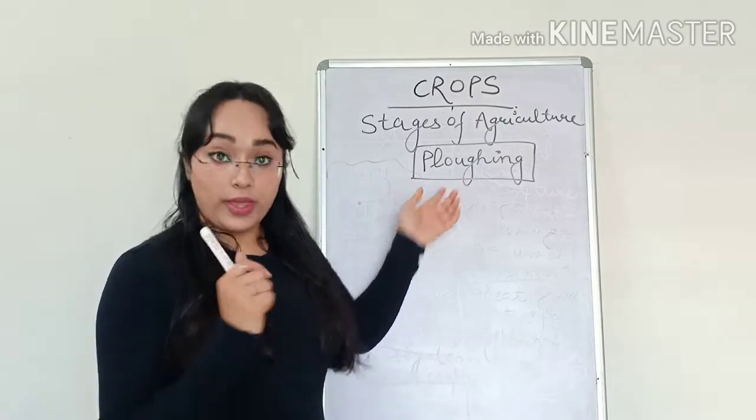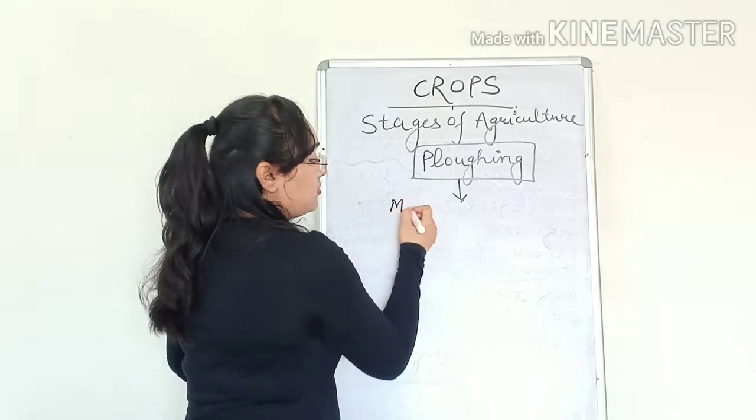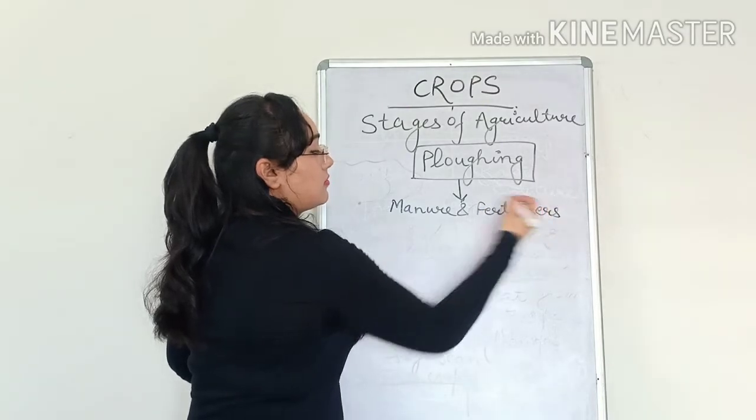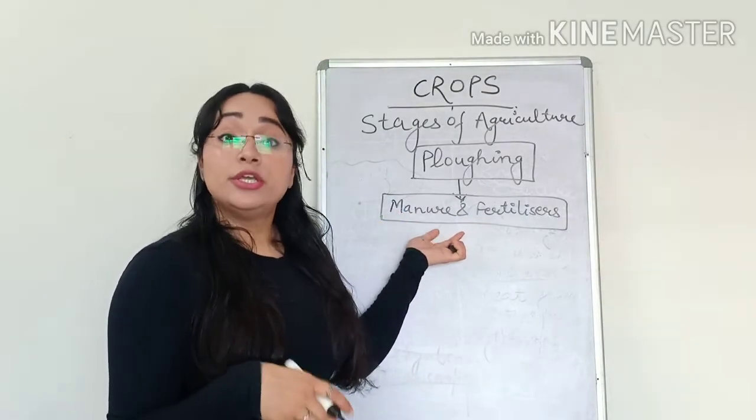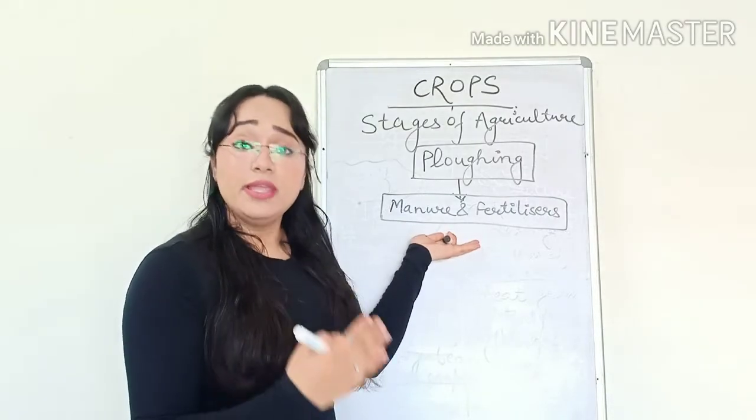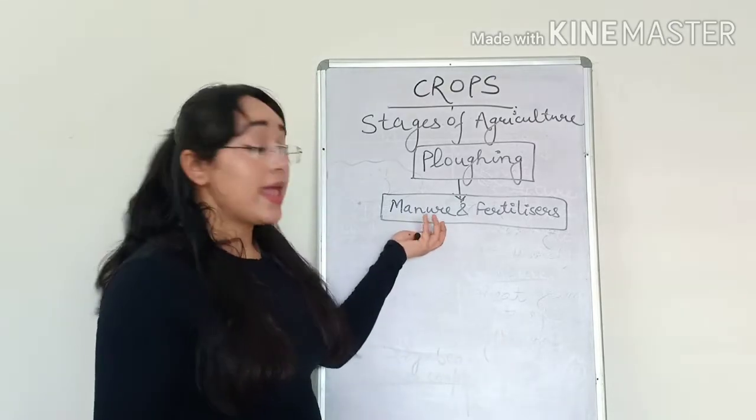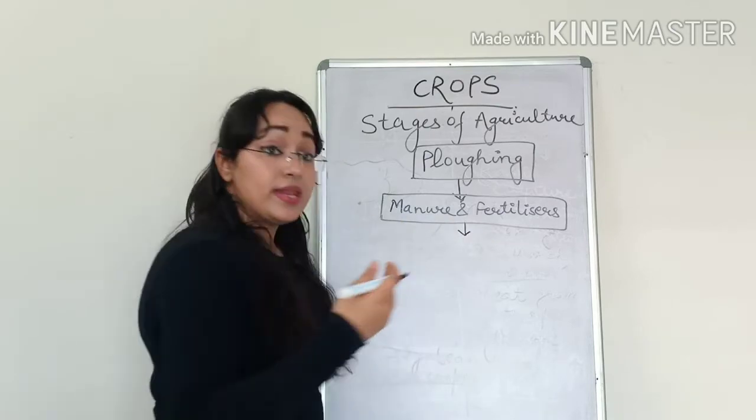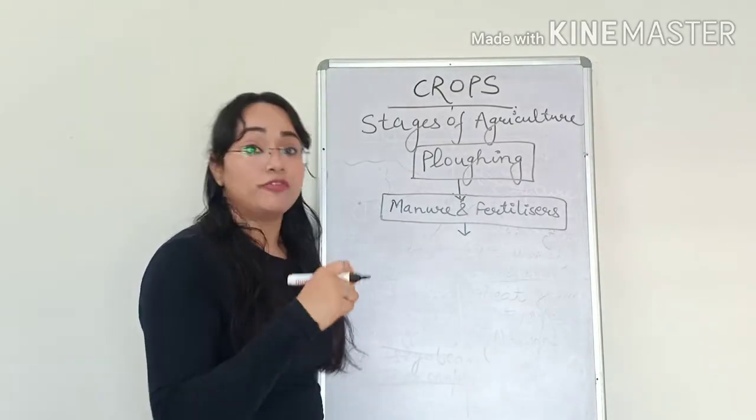The next step is adding manures and fertilizers. Manures and fertilizers are added into the soil in order to increase the quality and fertility of the soil, so that every necessary nutrient gets into the soil because of which the seed is going to germinate in a better way. That is why adding manures and fertilizers to the crops is very much necessary for the crops to grow in a healthy way.